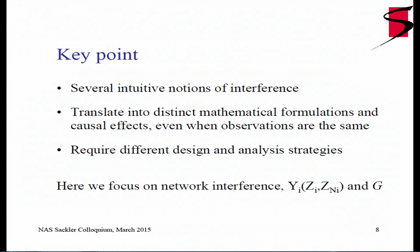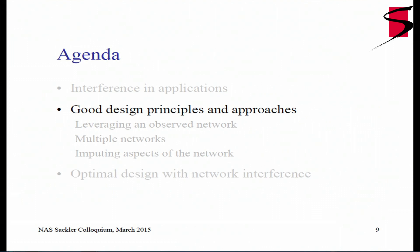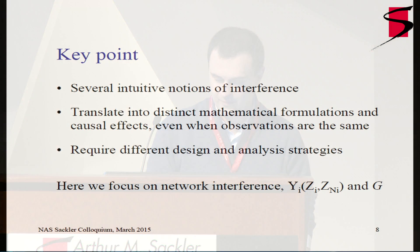In network interference, I have a graph G, and I have outcomes Y_i on units i. These outcomes are a function of the treatment I give to unit i and the treatment I give to units in the neighborhood of i, where N sub i is the neighborhood of unit i defined by the graph. I'm going to talk about design principles, focusing on how to design the inferential target — not yet how to design the experiment — and about alternative approaches to estimating such inferential targets.